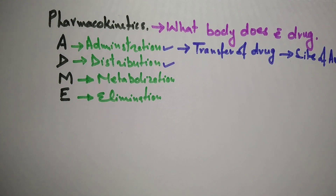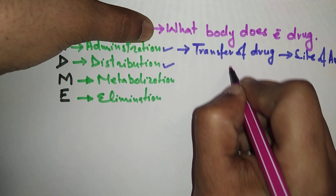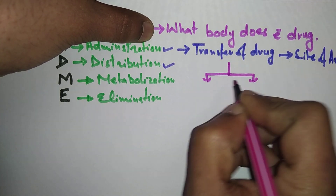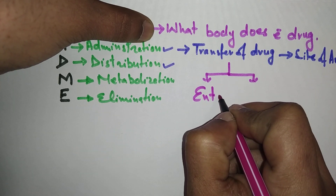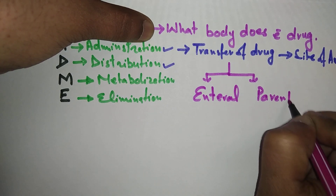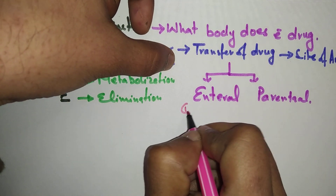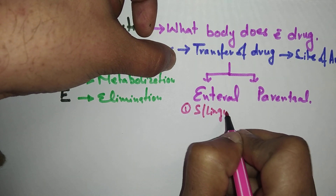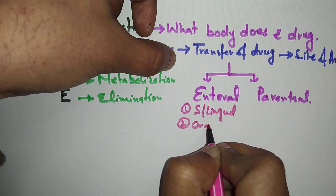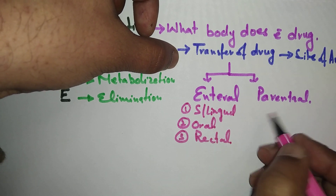If we are talking about the site of administration, we have two types. The first one is enteral (internal), and the second is parenteral. In the enteral route of drug administration, for example, we have sublingual, oral, and rectal.